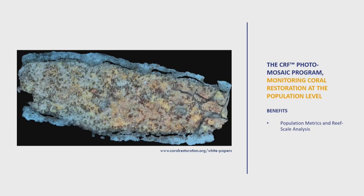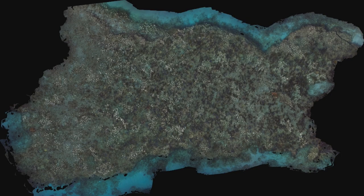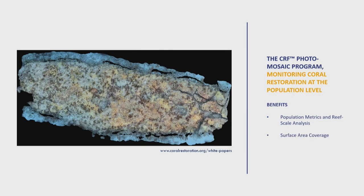Now let's talk about some of the benefits of this. The first benefit is that you get population-level metrics and reef-scale analyses. This is a restored spur and groove section of a reef here in the Keys, and all those little white dots are our outplanted corals — it speaks to the scale of how we're now analyzing the reef. We can easily generate surface area coverage, which has become our de facto measuring stick for how well our corals are doing and how well our restoration is working.